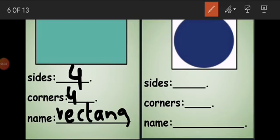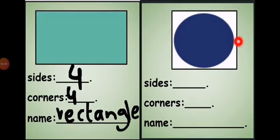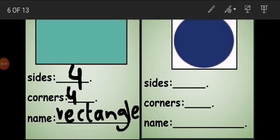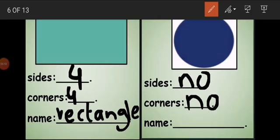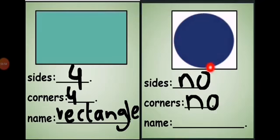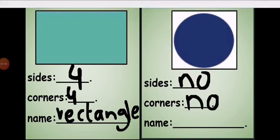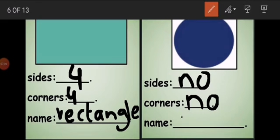Now look at this next shape. Does it have any sides or corners? No — this shape has no sides and no corners. It is a flat, closed 2D surface shape with no corners and no sides. What do we call it? Yes, this shape is called a circle.